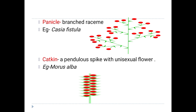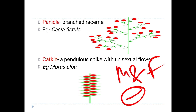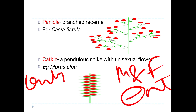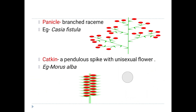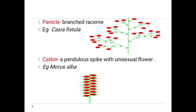A catkin is similar to a spike in that the peduncle bears sessile flowers without a pedicel. But the difference is that the flowers are unisexual — they do not contain both organs. They have either only male flowers or only female flowers. This is seen in Morus alba.